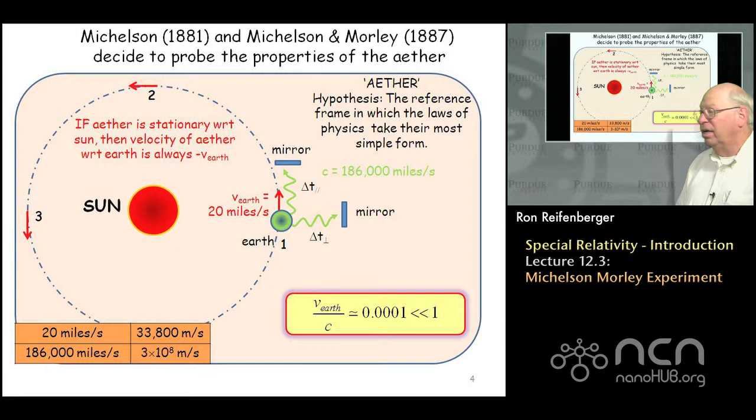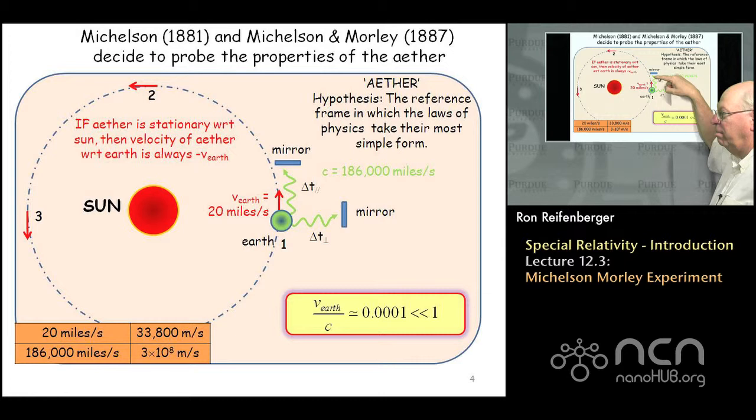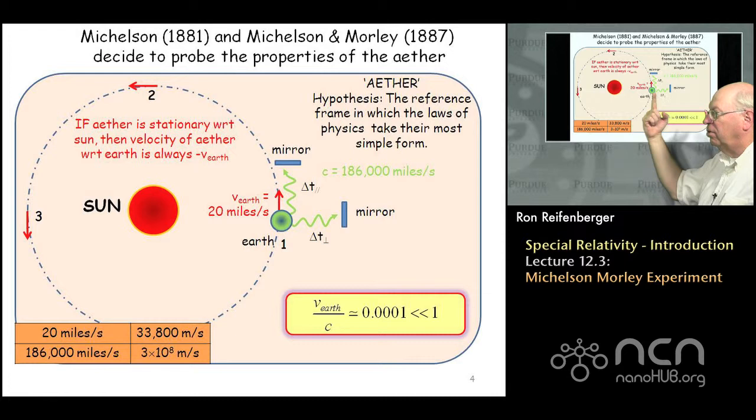So how are you going to measure those time differences? You're going to set up mirrors that reflect a light beam back to its origin. One mirror will be oriented so that it's parallel to the motion of the earth's velocity, and another mirror will be oriented so that the light motion is perpendicular to the drift velocity of the earth.